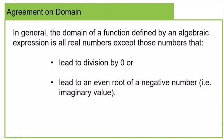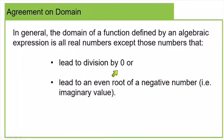Now we're going to talk about how to determine the domain and range when you're looking at the equation. In general, the domain of a function defined by an algebraic expression is all real numbers, except any numbers that cause us to divide by zero — because division by zero is not possible — or lead to an even root of a negative number. Any x values that cause either of these problems, we will leave out of the domain.